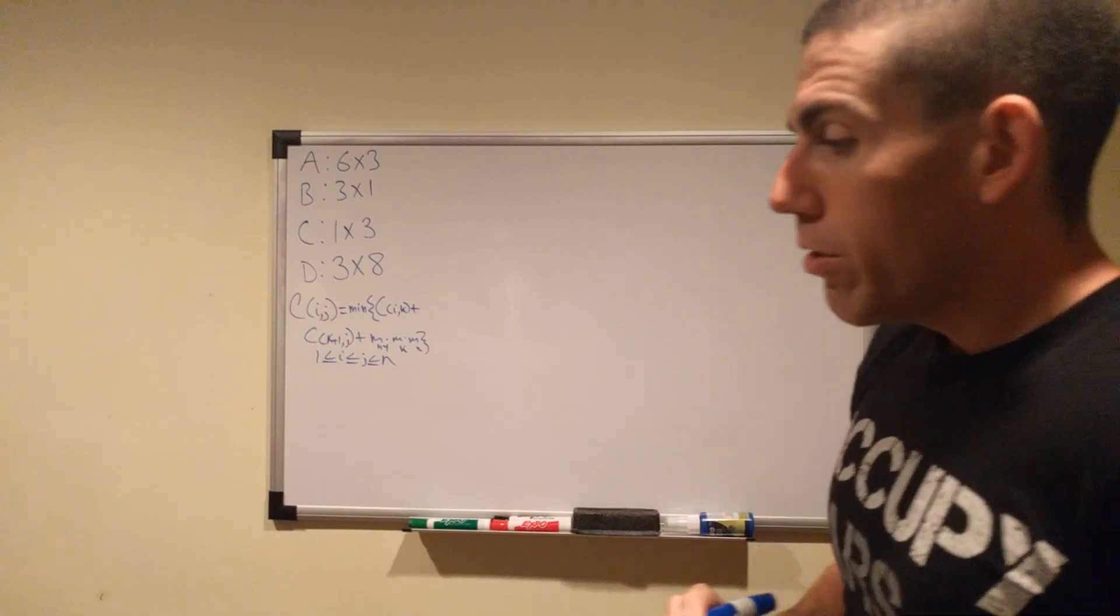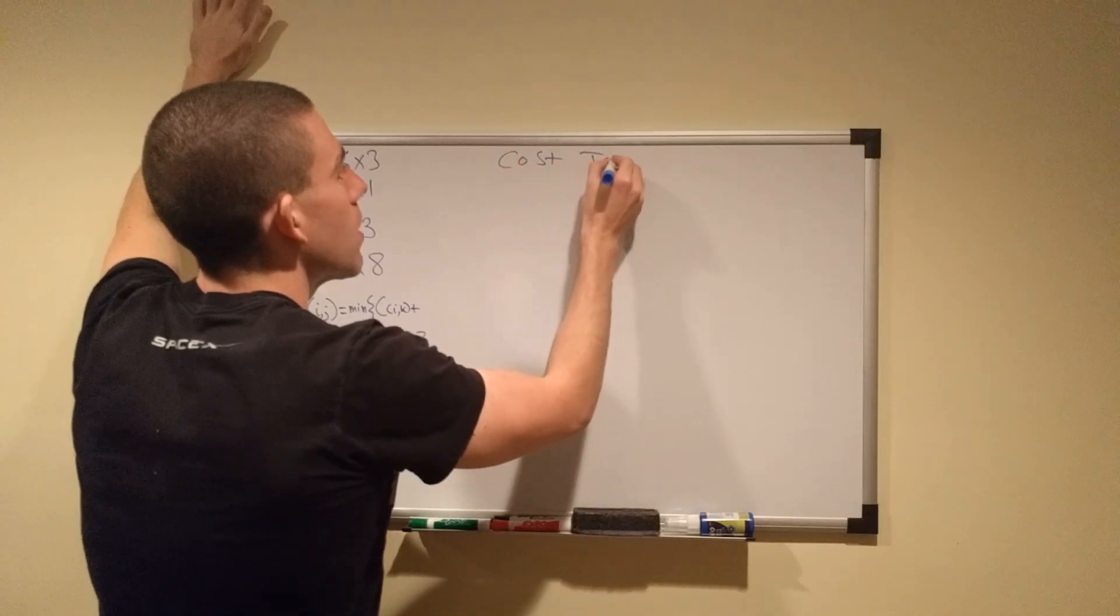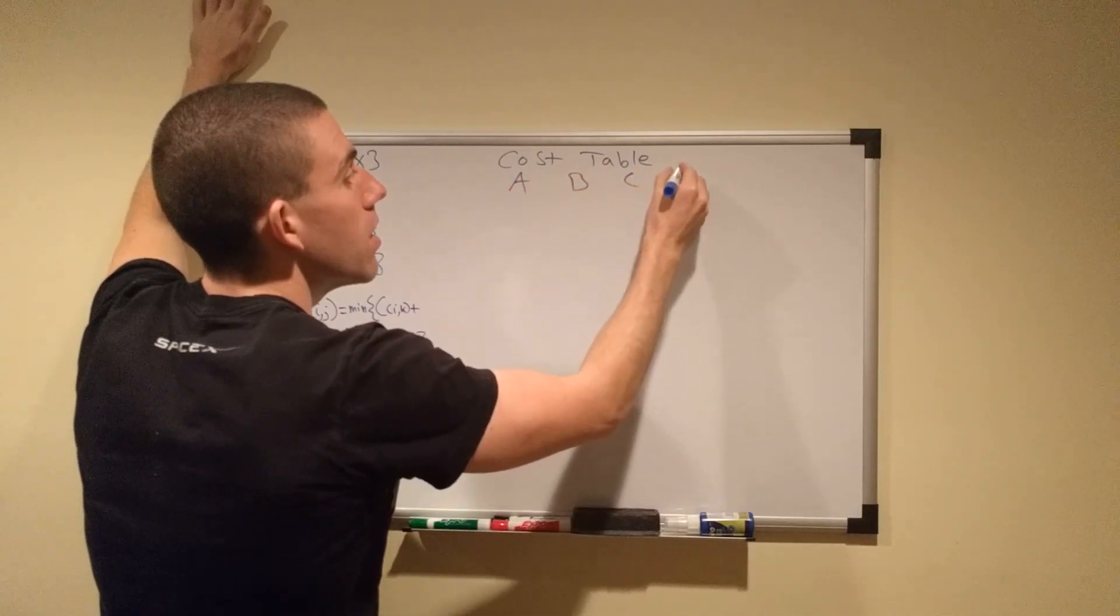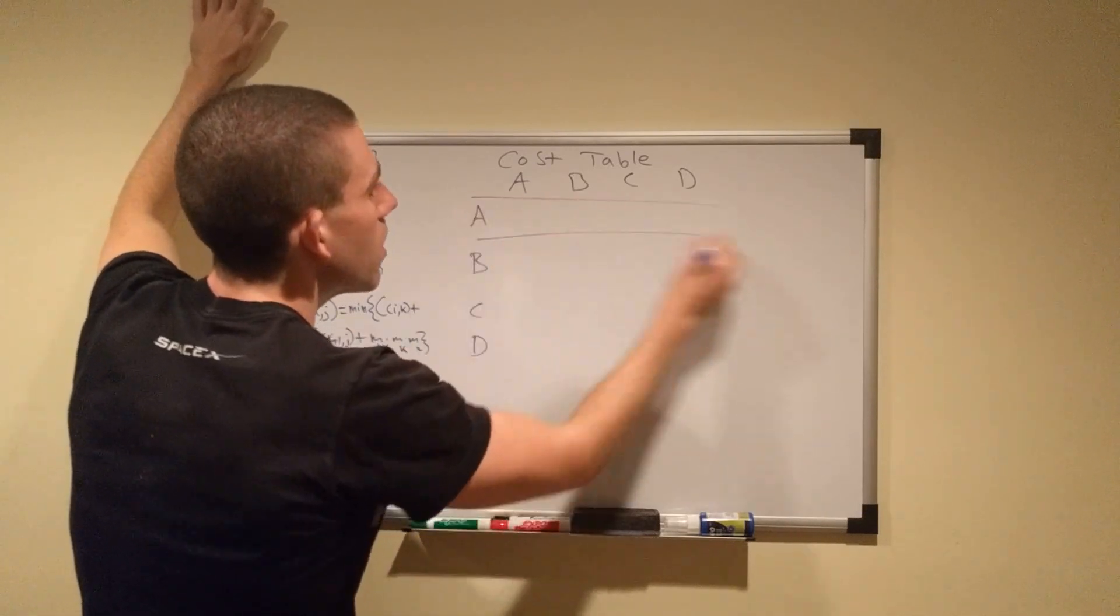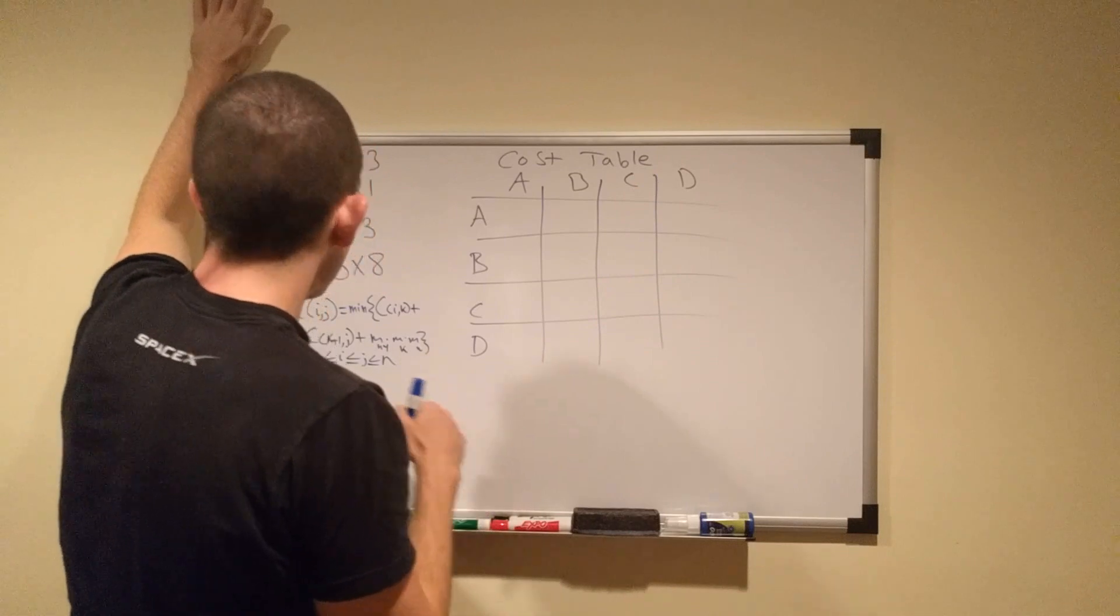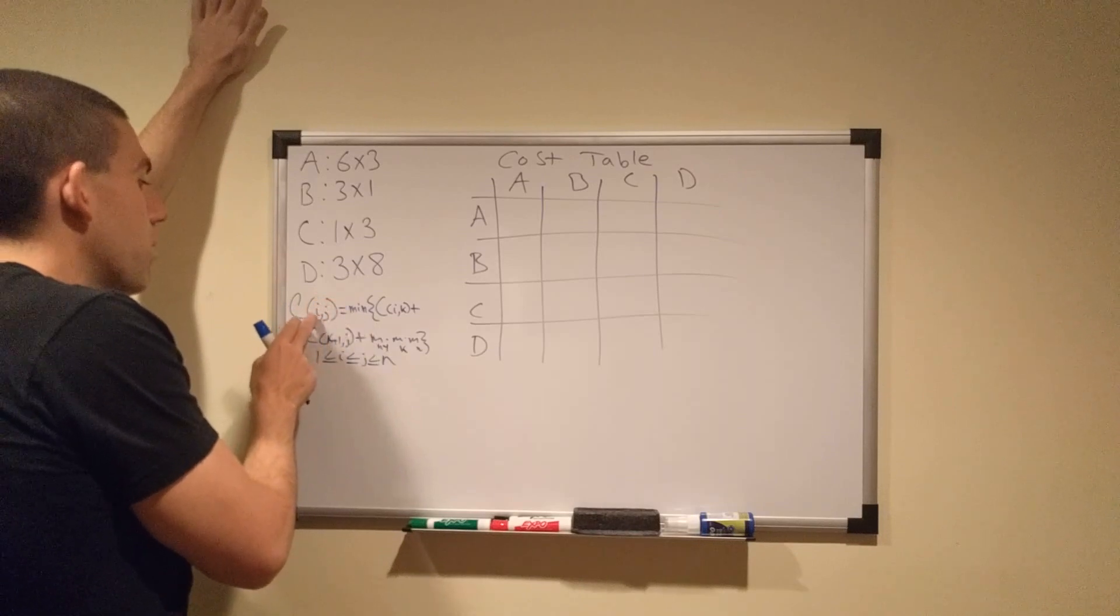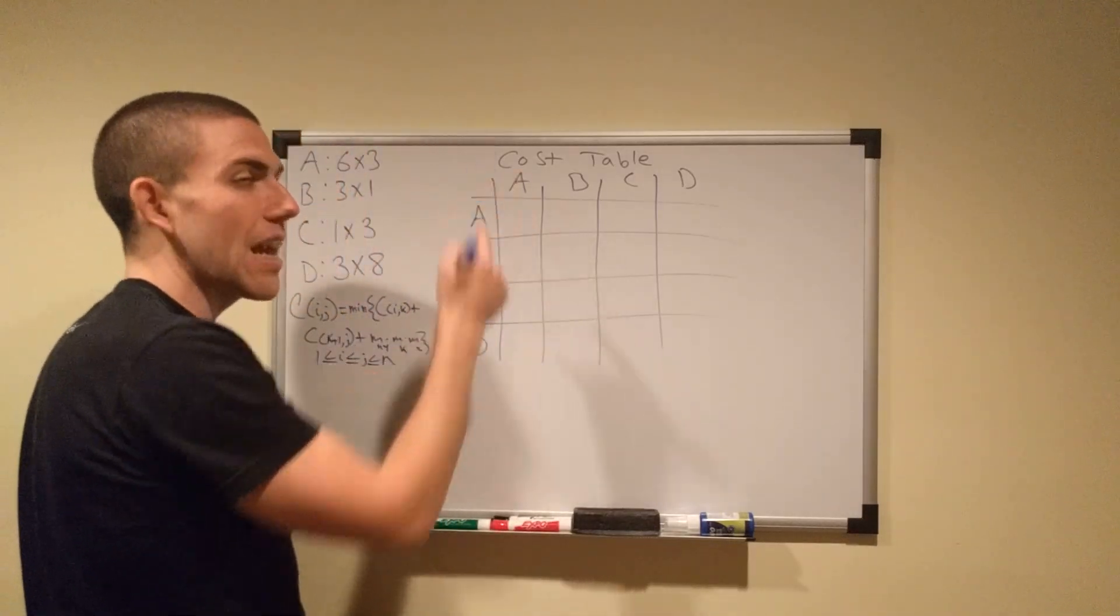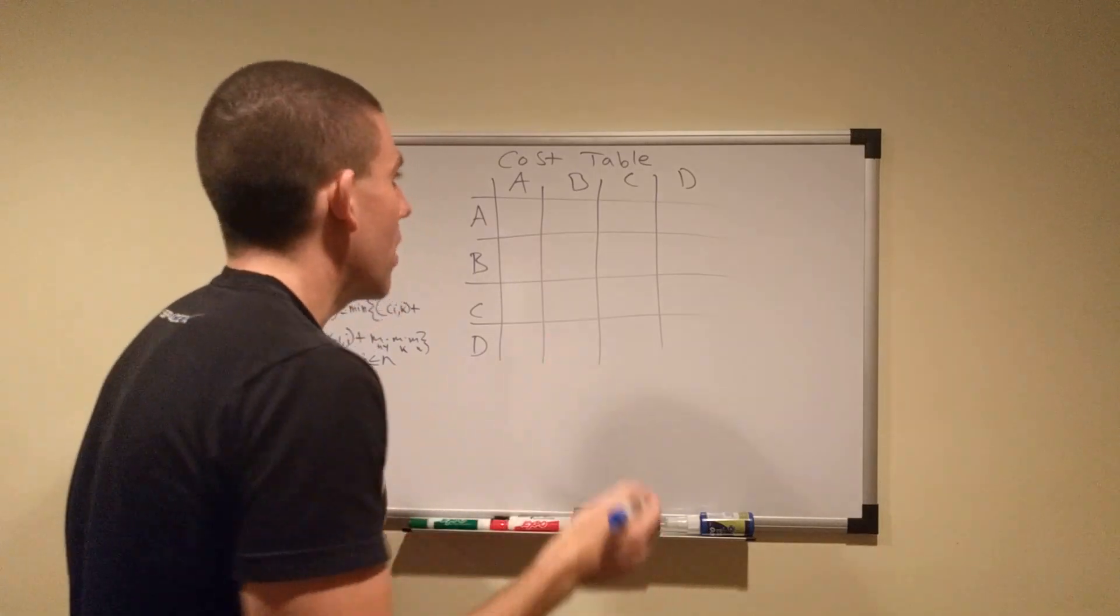So what we're going to do to start is we're going to make ourselves a cost table, a table of costs consisting of A, B, C, D. You remember that the cost is defined as c from i to j, and i can be equal to j. So if you do have a situation where you have c of like A to A, that's a situation where nothing is happening. If i and j are equal to each other, nothing is going on. So the cost is zero. So we zero out this whole diagonal here.